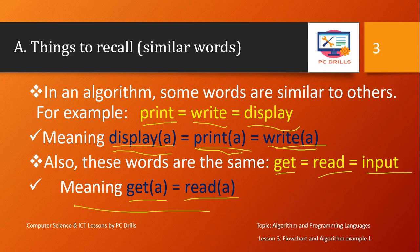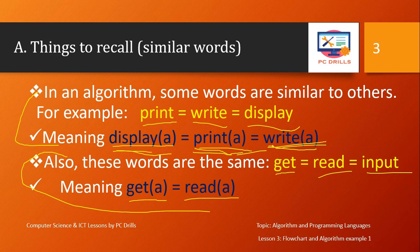The difference between these two groups is that print, write, and display are used to show something to the user, while get, read, and input are used to receive input from the user. For example, if you wish to display 'how are you', you can use write, print, or display — you choose one. You don't need to do all of them; they all mean the same thing.